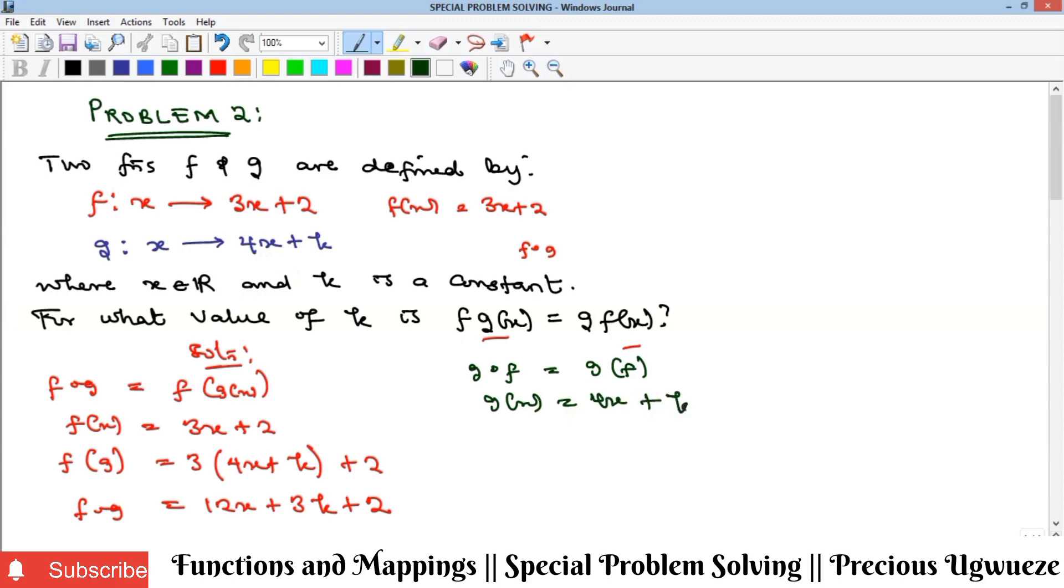If we now substitute f as our x, we're going to have our x become f(x), which is 3x + 2, and we now have plus k. If you simplify that, you get 12x + 8 + k. This is our g composition f.